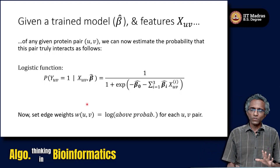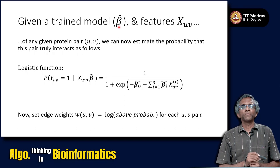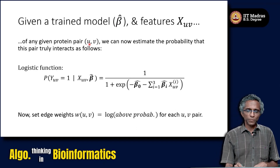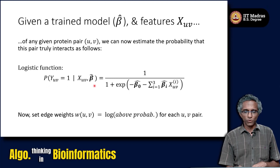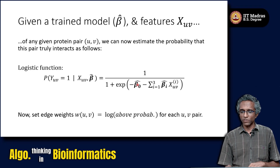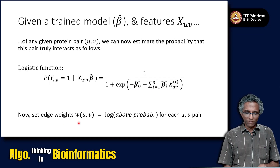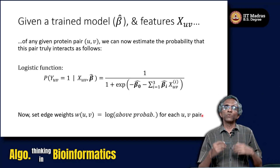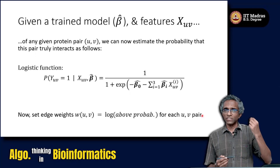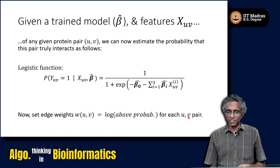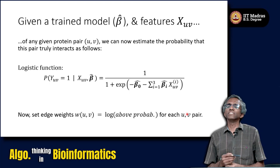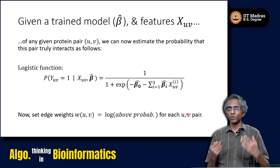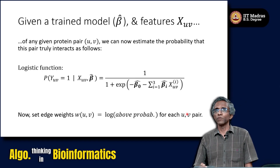Now that you have figured out the best values of beta from the training dataset, for any pair of proteins U, V you can predict the probability p_UV by replacing β₀ with β̂₀ and β_i with β̂_i — your estimated betas from training. Once you have this, for every U, V pair you can set the edge weight w(U, V) equal to the log of this estimated probability. Protein pairs with more experimental observations or higher gene expression similarity will get higher estimated probabilities, completing the solution to problem 1A.